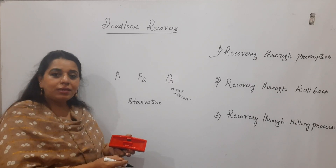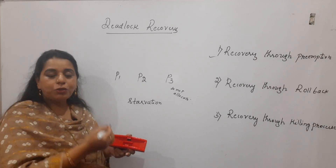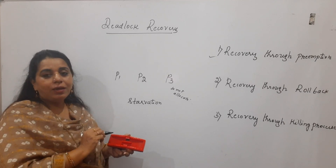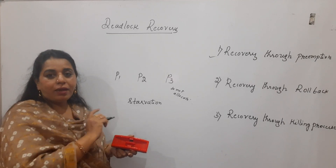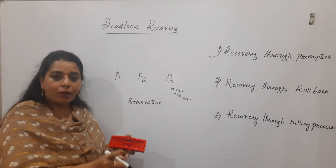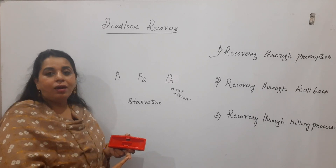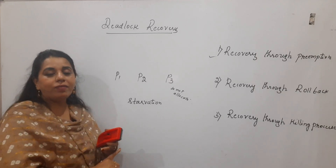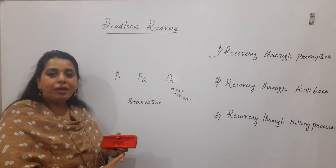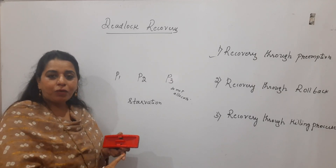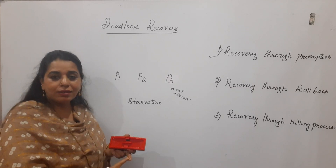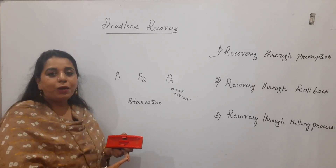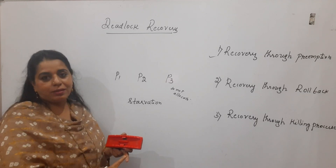A process which is initially at the beginning of its execution should be chosen to release the resources. Also, when carrying out this method, see that one particular process is not always chosen to make the system deadlock-free. Otherwise, that process will never complete its job — it will always be waiting, causing starvation. You should not penalize any one particular process all the time.